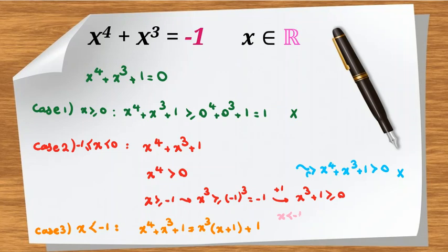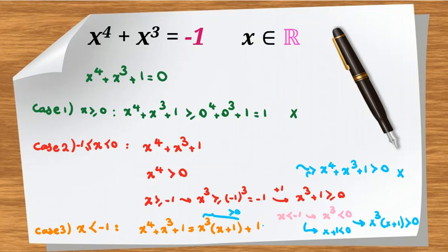Since x is less than negative 1, x cubed is less than negative 1, so x cubed is negative. Also, adding 1 to both sides of x less than negative 1 gives x plus 1 less than 0. Multiplying two negative numbers — x cubed and (x plus 1) — gives a positive product. So x cubed times (x plus 1) is positive, and adding 1 makes it greater than 1. We've proved this expression cannot equal 0.